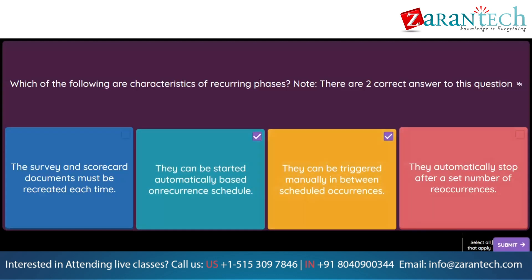Question. You are applying changes to a team member rules file for SAP Ariba Supplier Information and Performance Management. After exporting the file, you notice the field you need to build the rule in is missing from the available fields tab. Why is the field not listed? Note, there are two correct answers. Option 1: The field in the team member rules file has a visibility condition assigned to it. Option 2: The field was created after the team member rules file was first generated. Option 3: The field becomes available for use in the team member rules file when it is made reportable. Option 4: The field was deleted from the system prior to the team member rules file being generated.